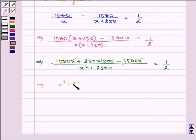x square plus 250x is equal to 250 into 1500 into 2, that is 750000.